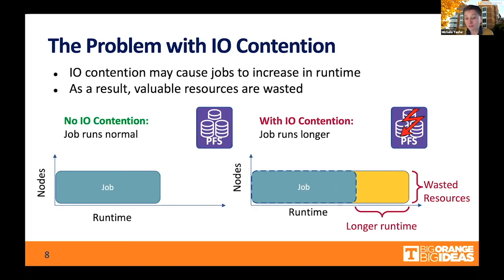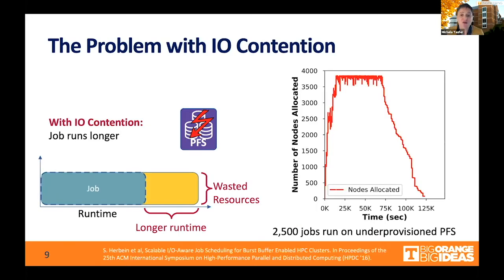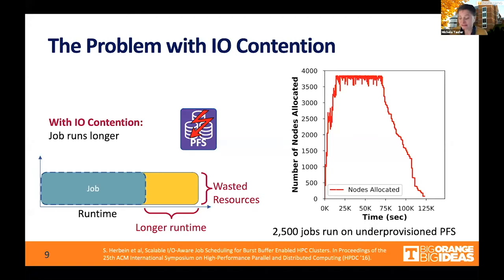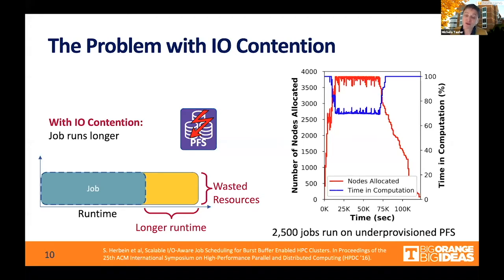And in becoming longer, we also have what we call wasted resources. Here on your right, you have a picture of a real experiment performed on a cluster at Lawrence Livermore. We had 2,500 jobs running on a system that had an under-provisioned parallel file system, so the parallel file system was not able to keep up with the requests of these jobs. We were allocating jobs to approximately 4,000 nodes, and what we were monitoring was the real timing of computation of these jobs.